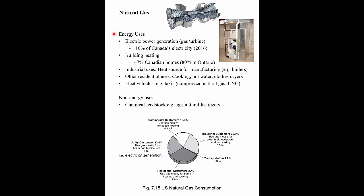We use natural gas in quite a variety of different ways. In Canada, about 10% of our electricity is produced using natural gas turbines. We also use natural gas for building heating — about 80% of Ontario homes are heated by natural gas furnaces, and maybe around 50% of Canadian homes. Natural gas is used a lot in industrial uses, especially as heat sources for manufacturing things like steel and glass. There are also residential uses: gas cooktops, natural gas hot water heaters, and even natural gas clothes dryers, though the majority of dryers are probably electrical.